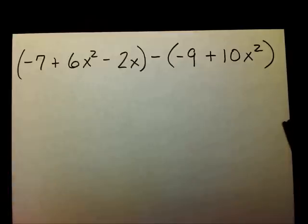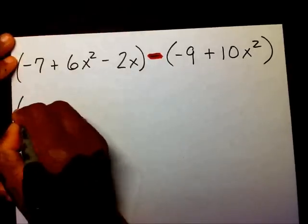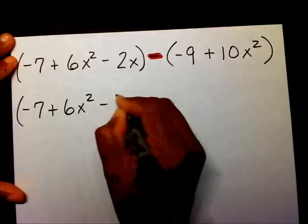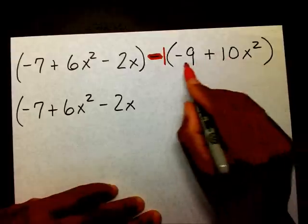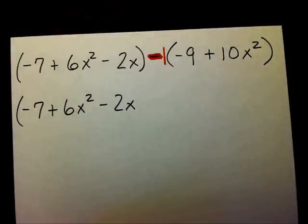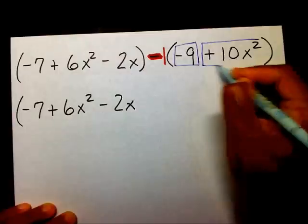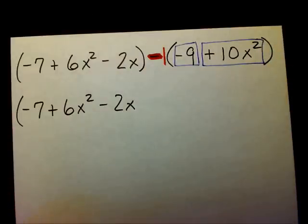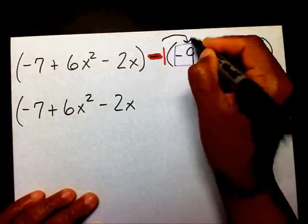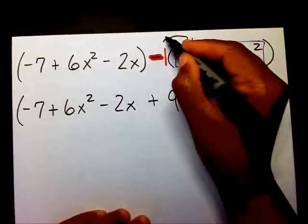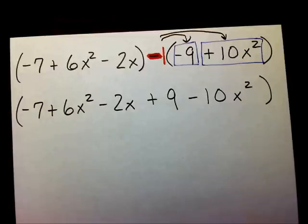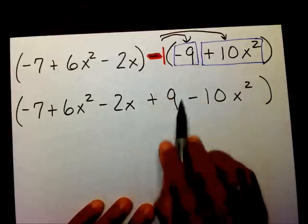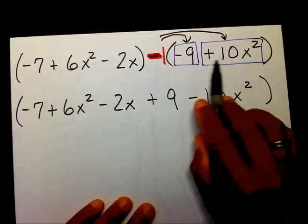The first thing you notice is that we are subtracting polynomials. So I'm going to write my first part down: negative 7 plus 6x squared minus 2x. Now when I get to my minus sign here, I'm going to multiply every term in here by a negative 1 — this term and this term. So negative 1 times negative 9 is a positive 9. Negative 1 times positive 10x squared is a negative 10x squared.